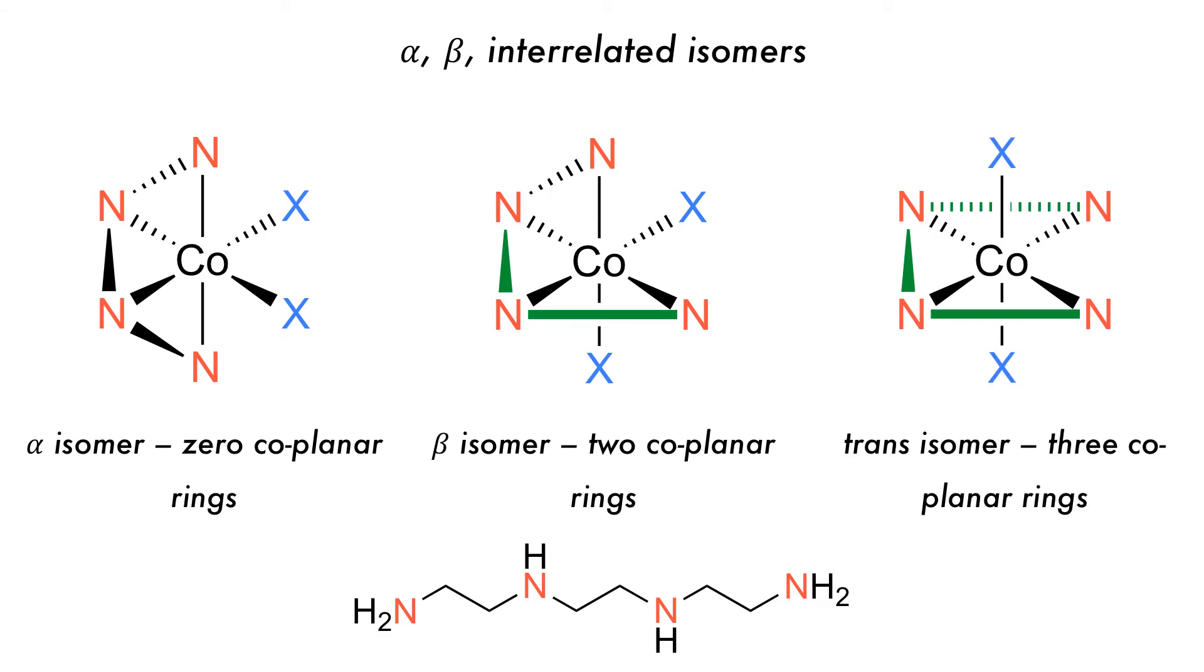If all the rings are coplanar, as in the third case, again indicated by the green bonds, it is instead a trans isomer as the X ligands are opposite each other.